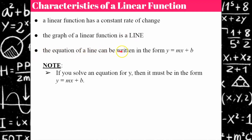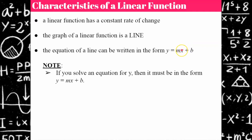The equation of a line can be written in the form y equals mx plus b. So algebraically, if you can solve an equation for y and it's written in this form — y equals the slope times x plus b — then it's the equation of a line. The key here is understanding that the exponent on x must be one, so it's invisible. That x is x to the first. If it has any other exponent with the variable term, then it's not a linear function.